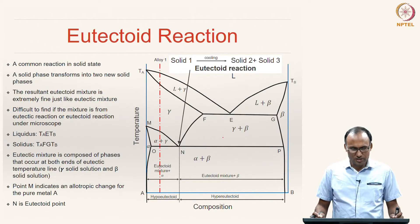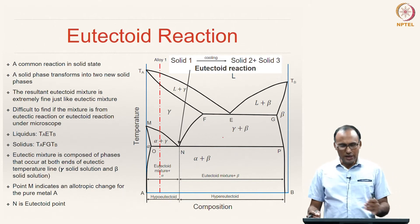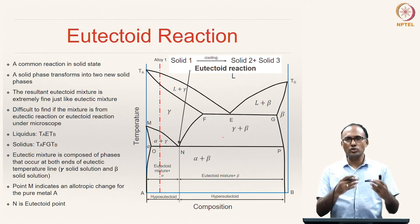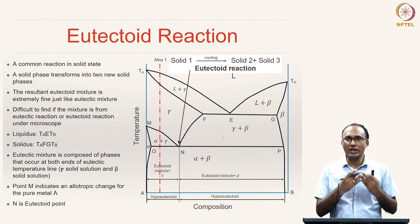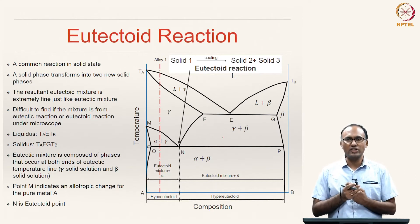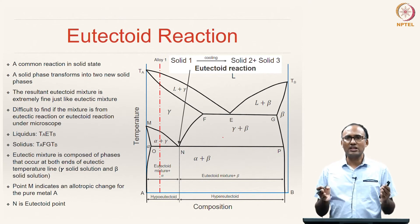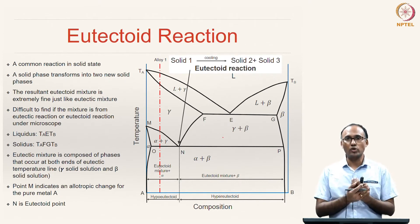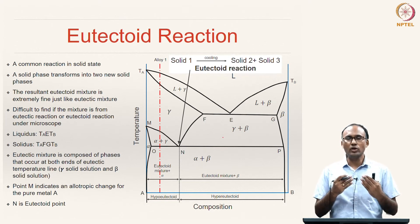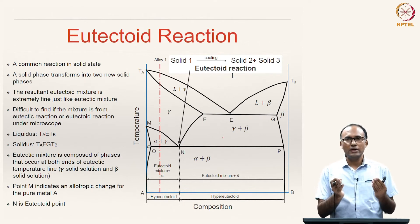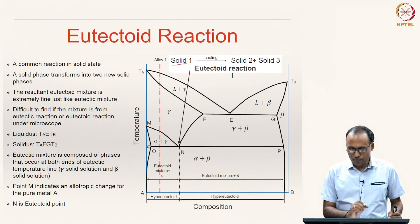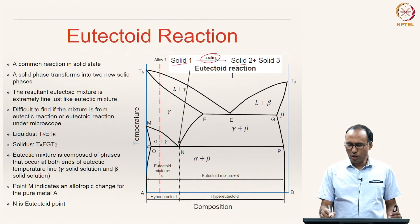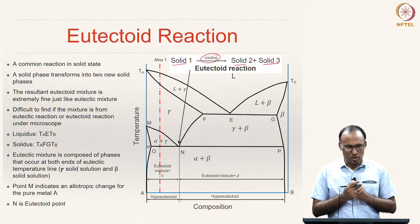The next reaction to discuss is the eutectoid reaction. The name is very close to the eutectic reaction we studied previously. The reaction formula looks the same except that wherever there is liquid in the eutectic reaction, you replace it with a solid — giving the eutectoid reaction, which is a solid state reaction. In the eutectic reaction, a liquid upon cooling gives two solids. In the eutectoid reaction, a solid upon cooling gives two different solids — solid two and solid three.